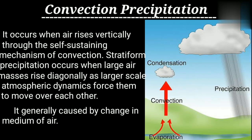Convective precipitation occurs when air changes — like warm air meeting cool air, causing convection. There is a difference in surface temperature, and variation in surface temperature is the key factor.